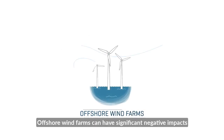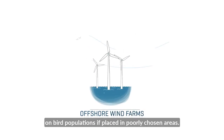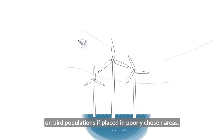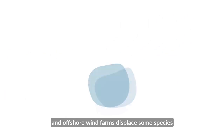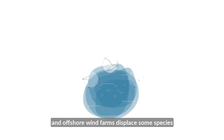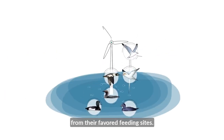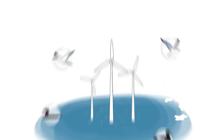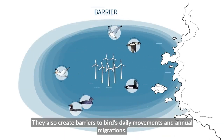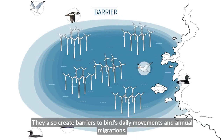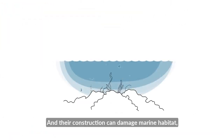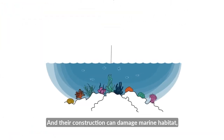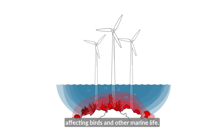Offshore wind farms can have significant negative impacts on bird populations if placed in poorly chosen areas. Birds can collide with the turbine blades, and offshore wind farms displace some species from their favoured feeding sites. They also create barriers to birds' daily movements and annual migrations, and their construction can damage marine habitats, affecting birds and other marine life.